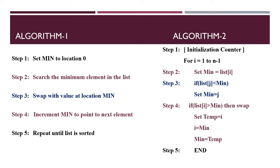Outside the body of the inner loop j, check if the value of list[i] is greater than the value of list[minimum]. If so, swap the numbers. Outside the body of the outer loop i, the array is fully sorted.